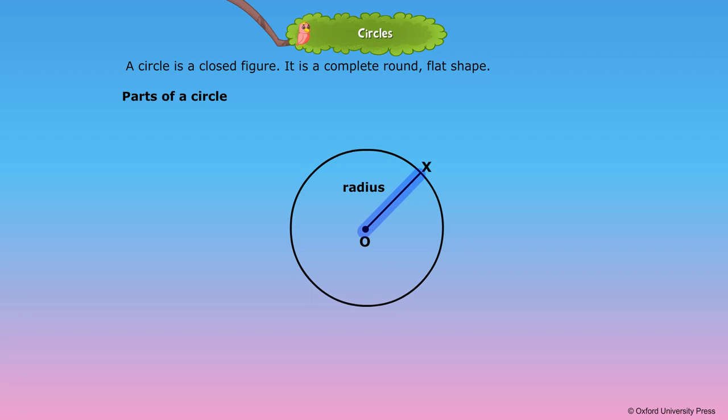A radius is a line with one end point at the center and the other on the circumference.